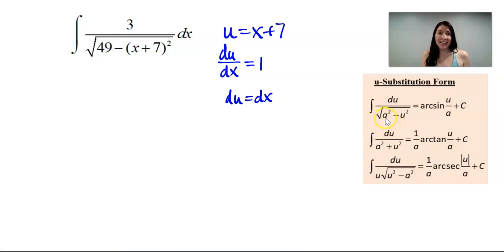Furthermore, I can see right here that my a squared is equal to 49, which means a has to be equal to 7.